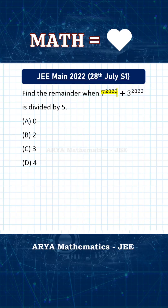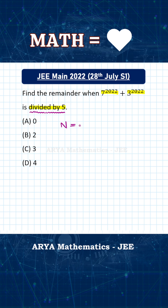Find the remainder when 7 raised to 2022 plus 3 raised to 2022 is divided by 5. This type of problem on remainder calculation is very common, and generally we use the binomial theorem. But for this particular problem, there is another much easier approach. Basically, we are dividing the number n — which is 7 raised to 2022 plus 3 raised to 2022 — by 5.